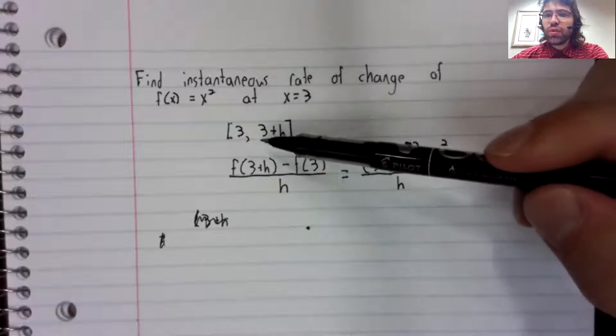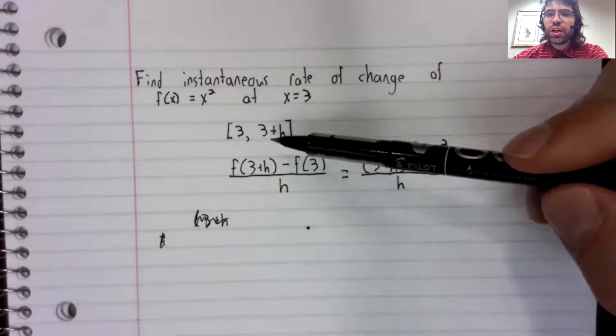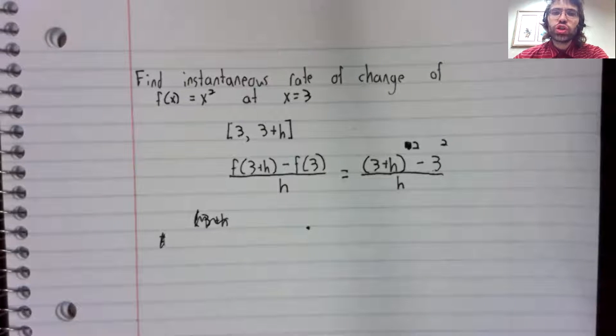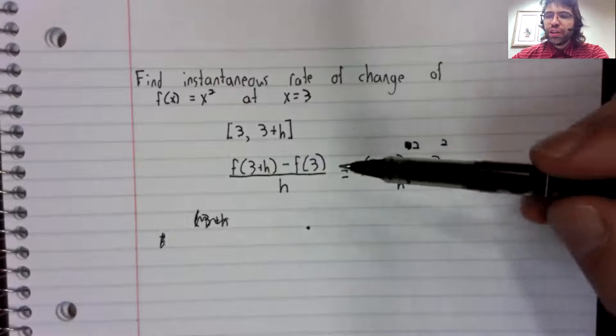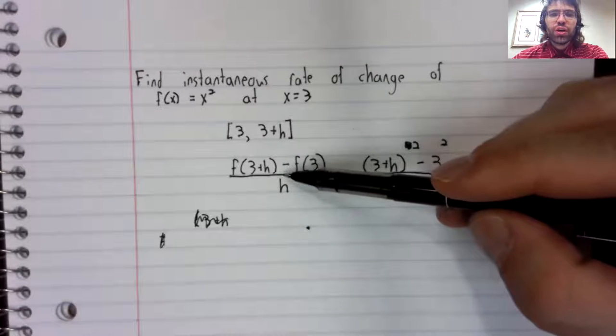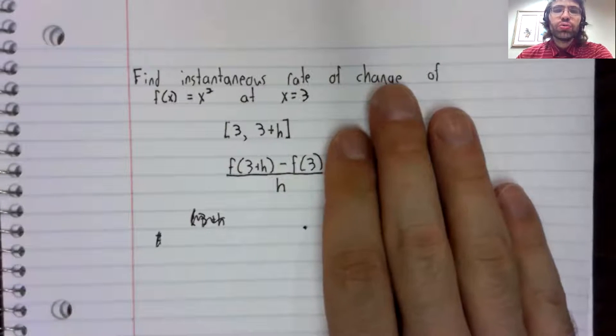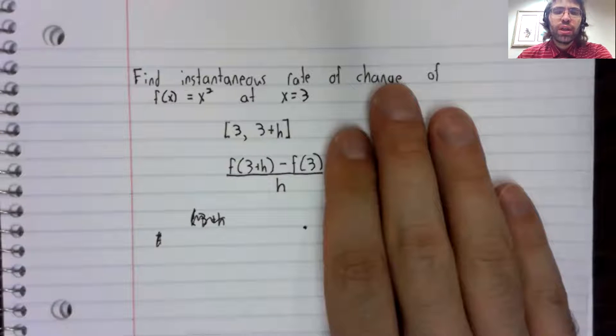So we'll think of the interval that we're looking at as three comma three plus h. And we look at the average rate of change on that interval. Our goal is to let h get closer and closer to zero. But it's not at all obvious what happens to this as h gets closer to zero.